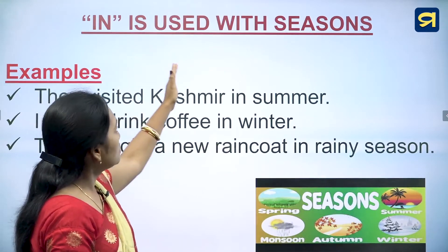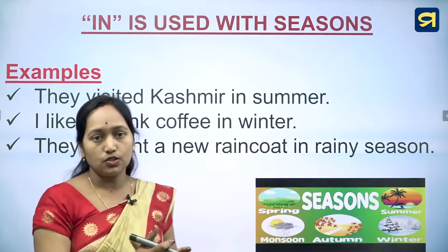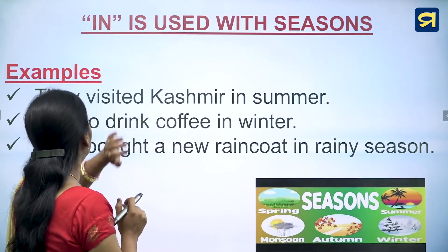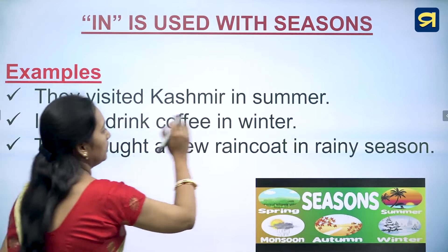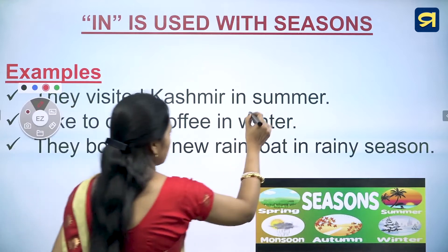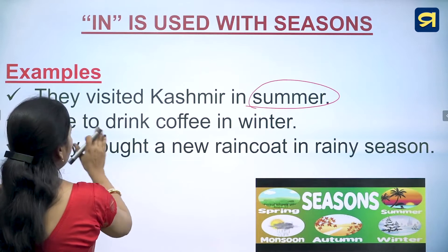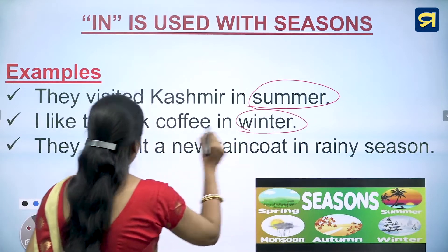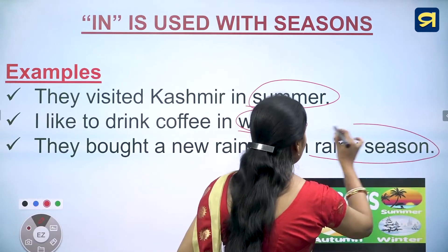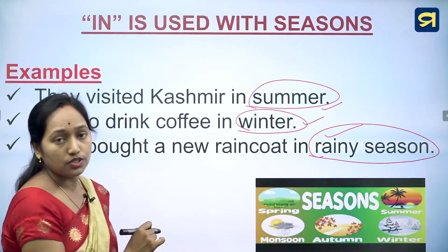'In' is used with seasons — summer, rainy season, spring season, winter. For example: they visited Kashmir in summer, I like to drink coffee in winter, they bought a new raincoat in rainy season. All these refer to seasons, so we use 'in'.